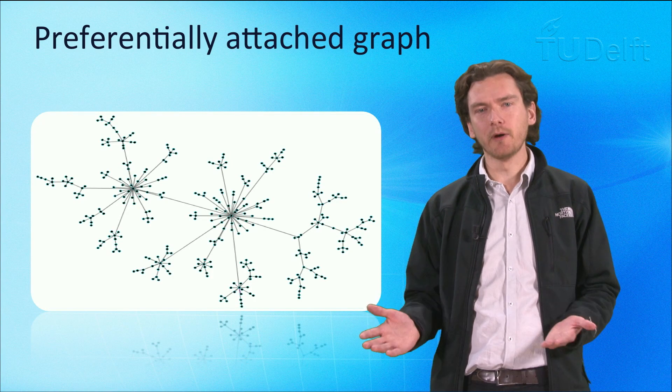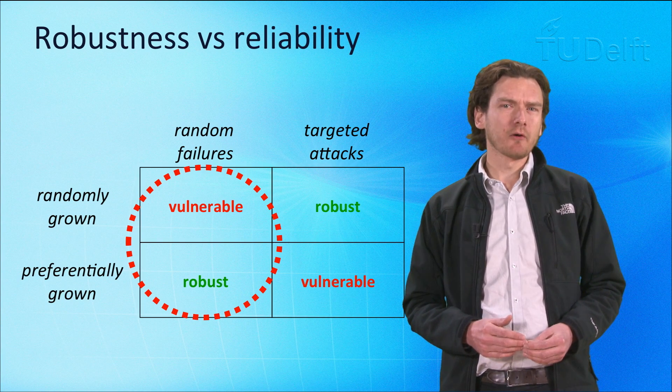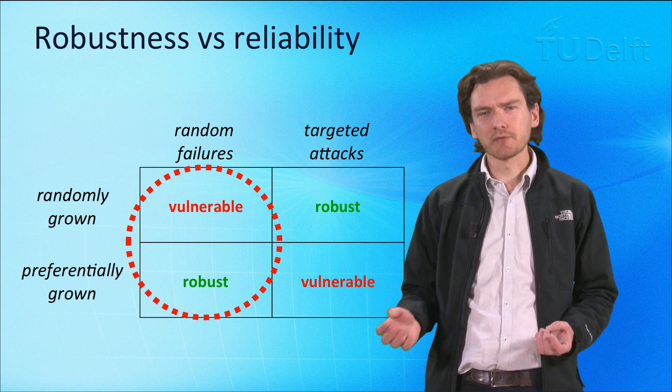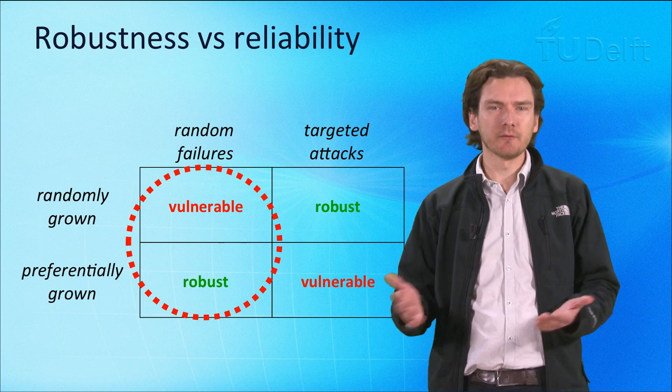The topology of these two graphs can have a large influence on how they respond to failures and to attacks. Here we define robustness of the graph in terms of the number of nodes that are still connected into a single connected graph.